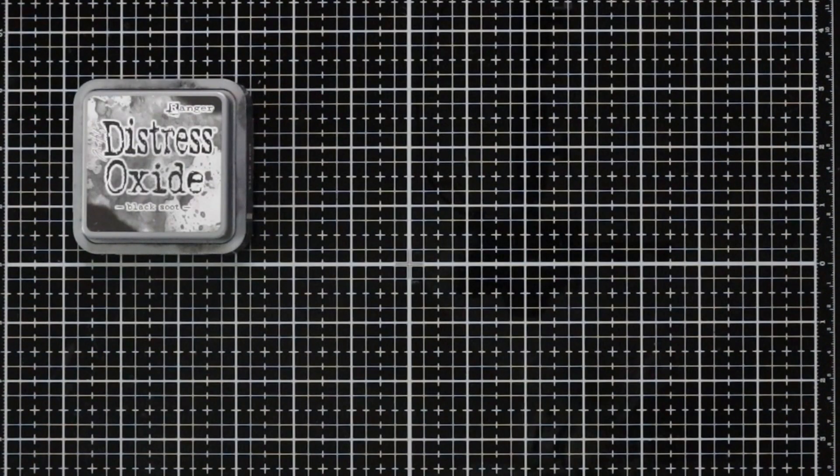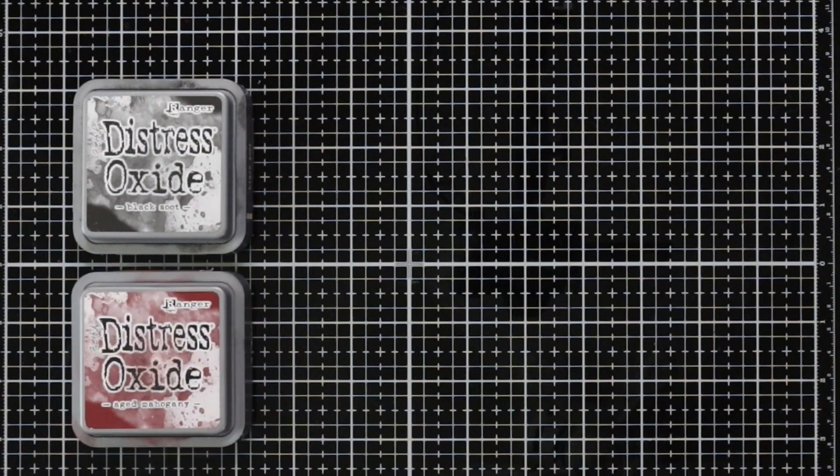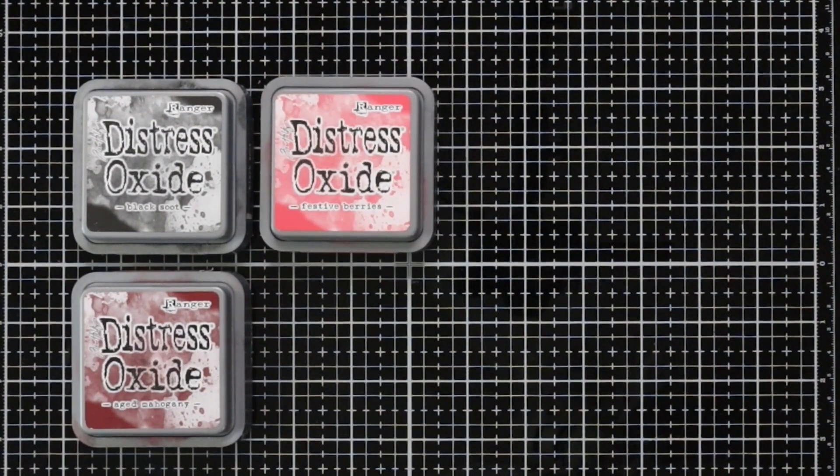My inks for today are from the Distress Oxide line so I have black soot, aged mahogany, festive berries, and then some Versamark ink for heat embossing.